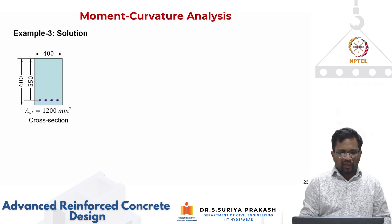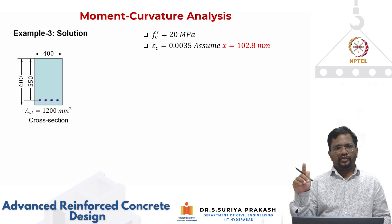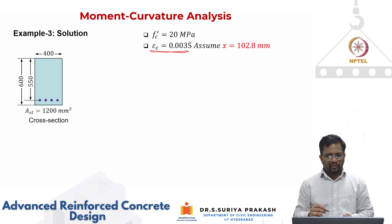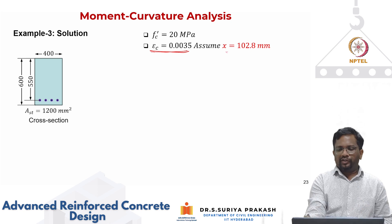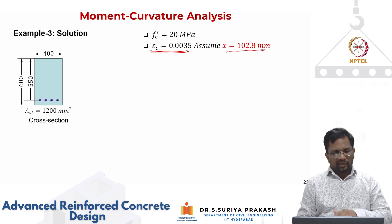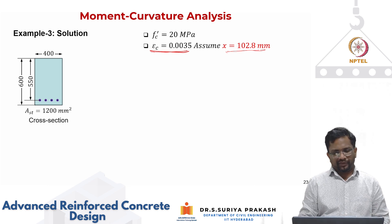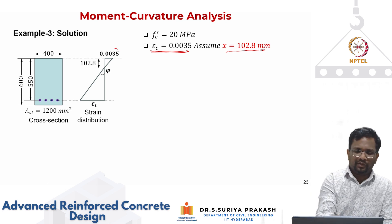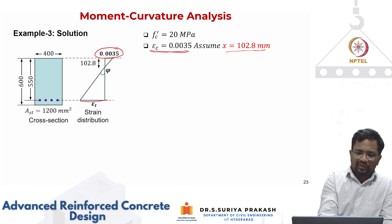Here we are doing the analysis only for the ultimate condition when the concrete strain at top is 0.0035. It is a heavily under-reinforced section, so we assume a neutral axis depth of 102.8 mm. We have already done the calculations and found that at x equal to 102.8 the equilibrium condition is satisfied. This is your strain diagram assuming epsilon_cu, and once x and epsilon_c are fixed we can get epsilon_t.